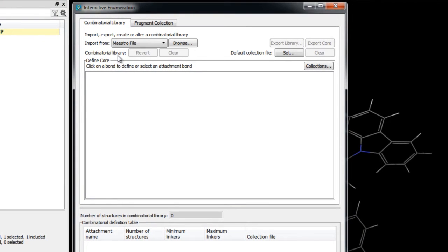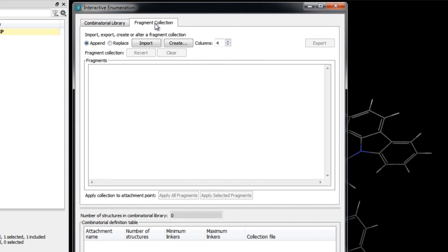Note there are two tabs. Combinatorial library displays the controls for defining the core, whereas the fragment collection tab displays controls for defining the various R group fragments which will be attached to the core.